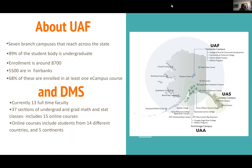About UAF — we have three main campuses in the state and seven branch campuses that reach across the state. If you look at the map, we also have a couple of satellite campuses, which are usually just a person sitting in an office helping students remotely. 89% of our student body is undergraduate students. Enrollment is about 8,700, with 5,500 in the Fairbanks area.